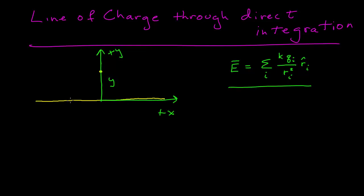The solution is we come to our infinite line of charge and look at just a point, or as close to a point as we can. Since we can't do exactly a point, what we do is take a very small — an infinitesimally small — interval along the line of charge, which we'll call dx. This interval is so small that it can be represented as a point, and the particle model applies to this very small segment.